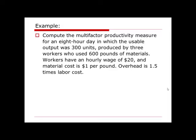The last example: we need to calculate the multi-factor productivity measure for an 8-hour day in which the useful output was 300 units, produced by 3 workers who used 600 pounds of materials. Workers have an hourly wage of $20 and material cost is $1 per pound. Overhead is 1.5 times labor cost. The first thing to remember is the question says 'useful output' was 300 units. When we calculate productivity, the output should be the useful — or qualified — output.